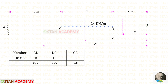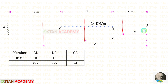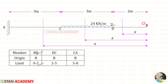Now let us make a table. In the table, first let us enter the members. There are 3 members: Bd, dc, and ca. For all of the sections, the origin is B. The limit for Bd is 0 to 2, for dc it is 2 to 5, and for ca it is 5 to 8.